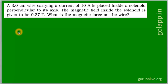A 3.0 centimeter wire carrying a current of 10 amperes is placed inside a solenoid perpendicular to its axis. The magnetic field inside the solenoid is given to be 0.27 tesla. What is the magnetic force on the wire?